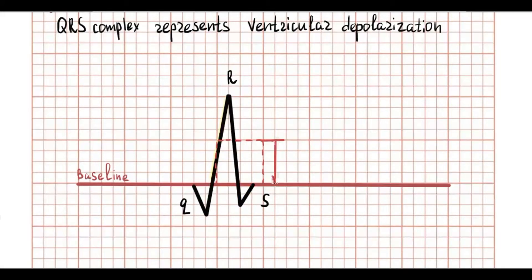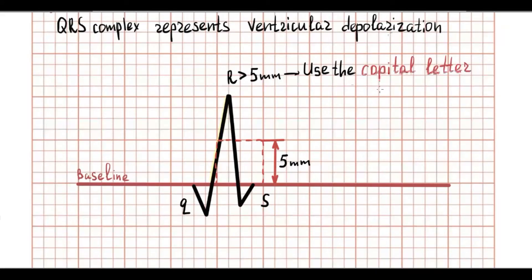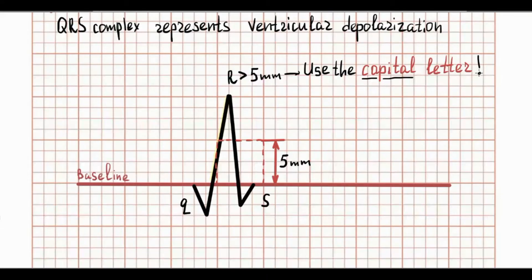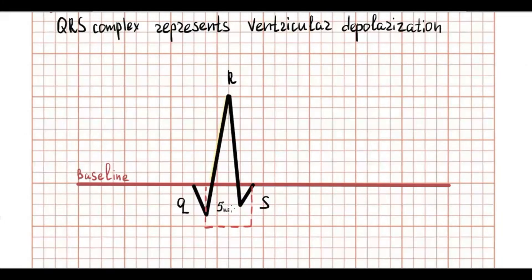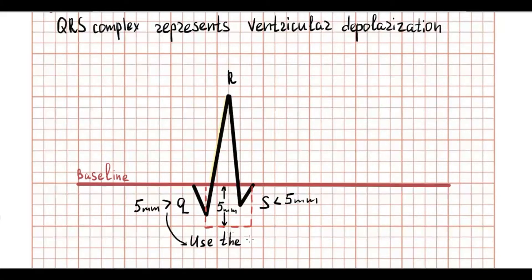If the wave is more than 5 mm in amplitude, we use the capital letter for the name. If the wave is less than 5 mm in amplitude, we use a lowercase letter.